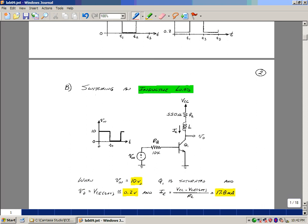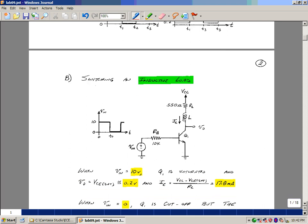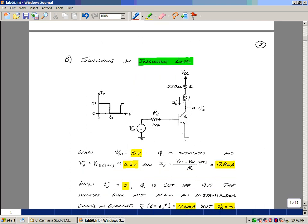The relay that we're going to use to control this large current fan consists of a coil of wire, which has some resistance and then some inductance. Let's take a look at some of the unique problems with switching an inductive load, and we'll put this whole circuit together.